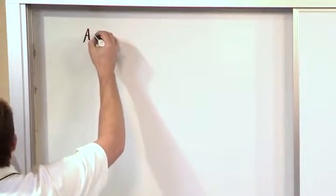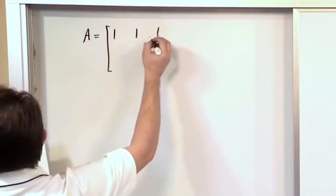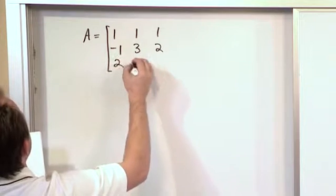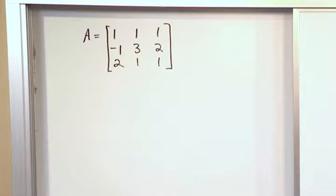So in this case, the matrix that we have is 1, 1, 1, negative 1, 3, 2, 2, 1, 1. This is our matrix and we would like to find the inverse of this matrix.